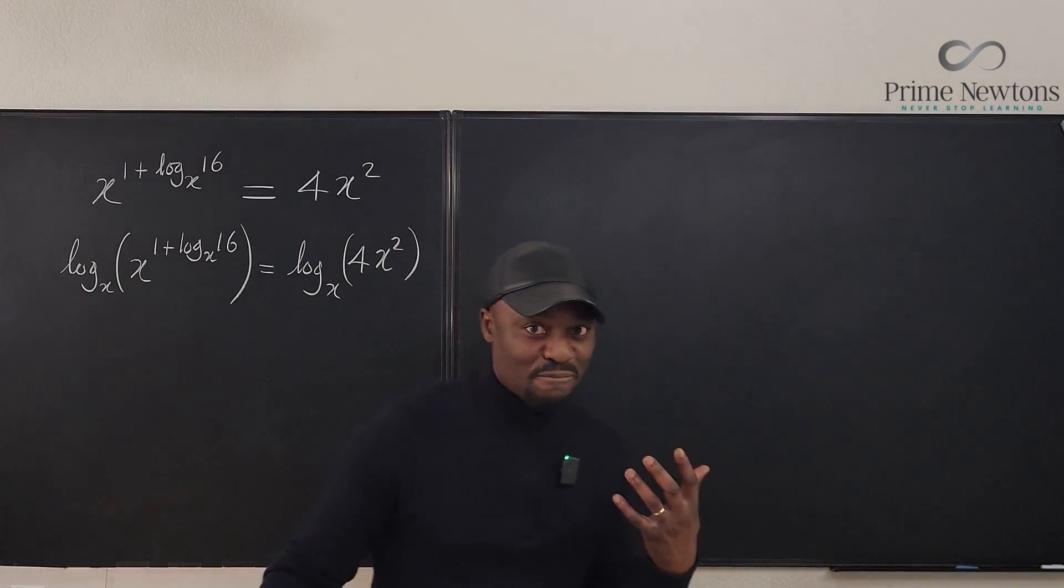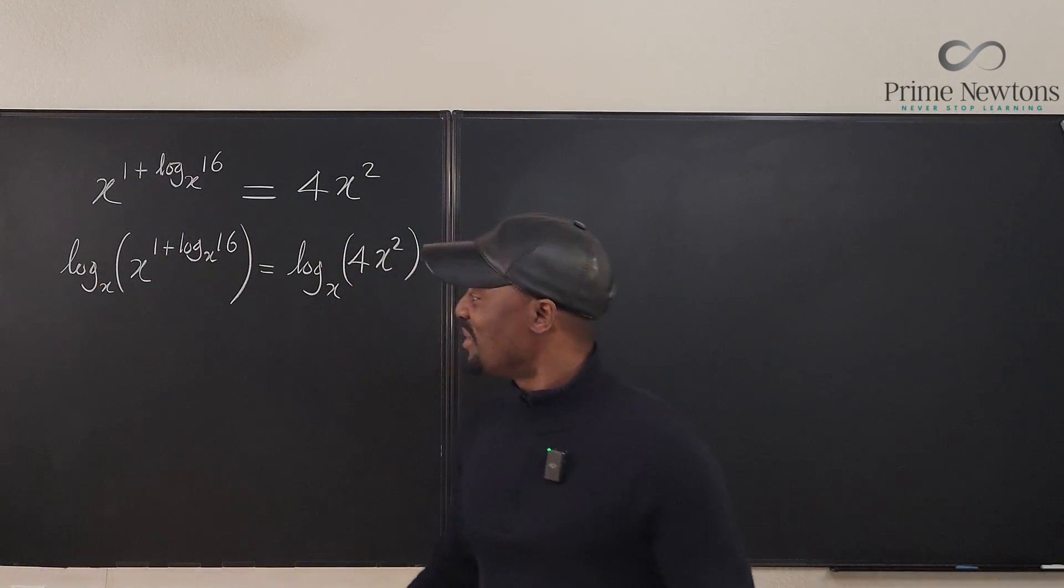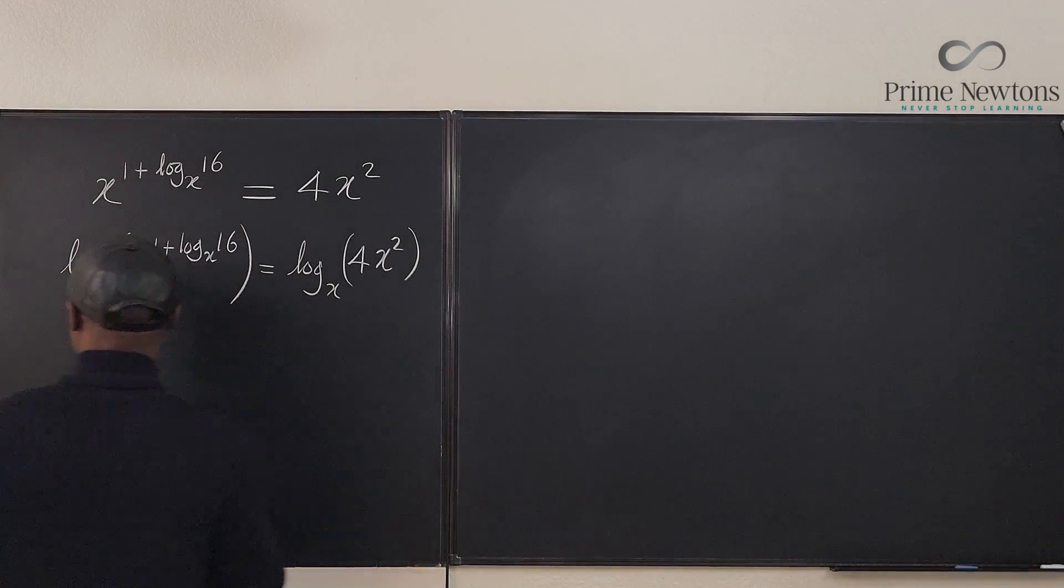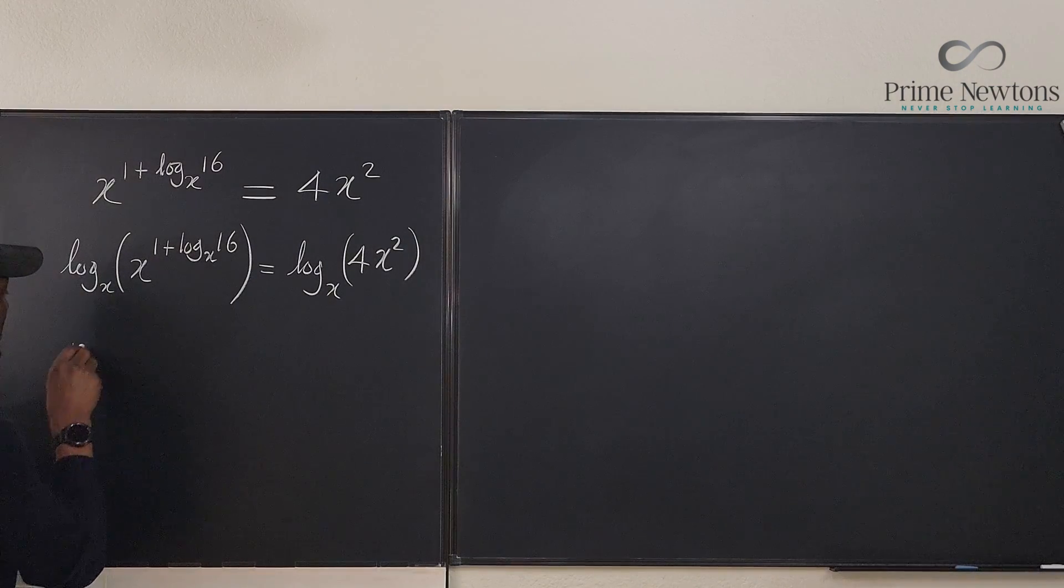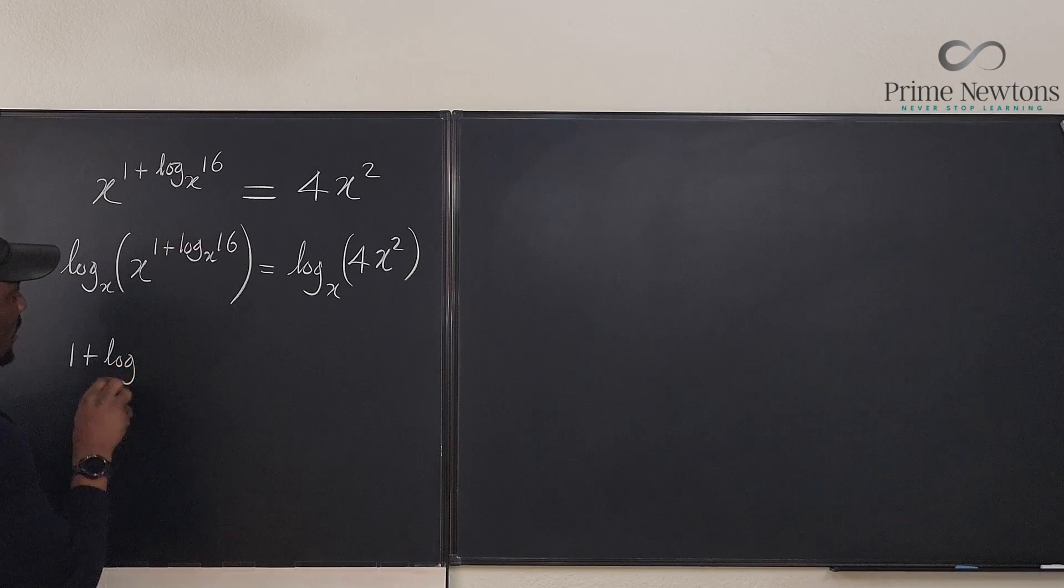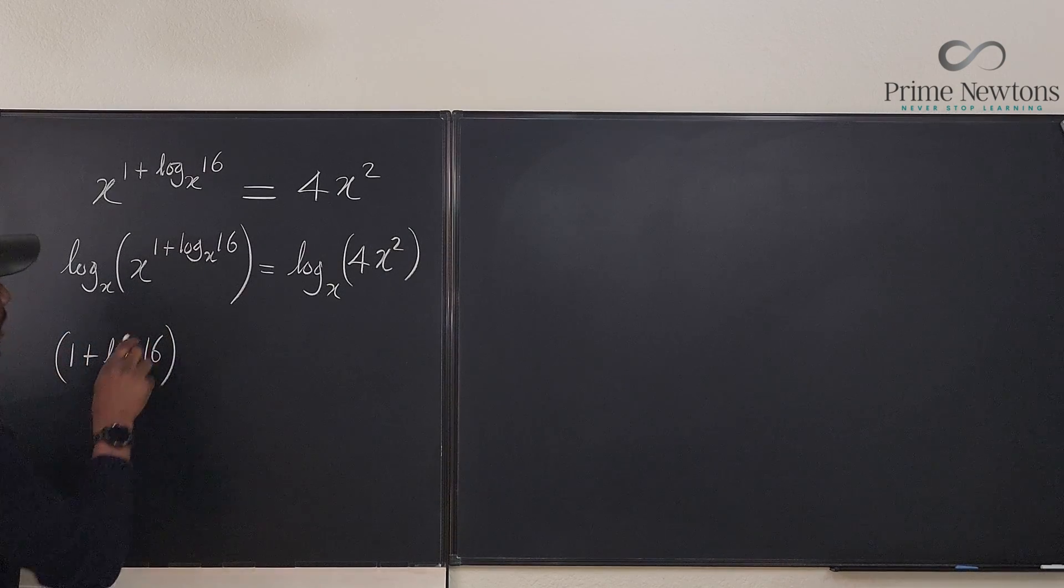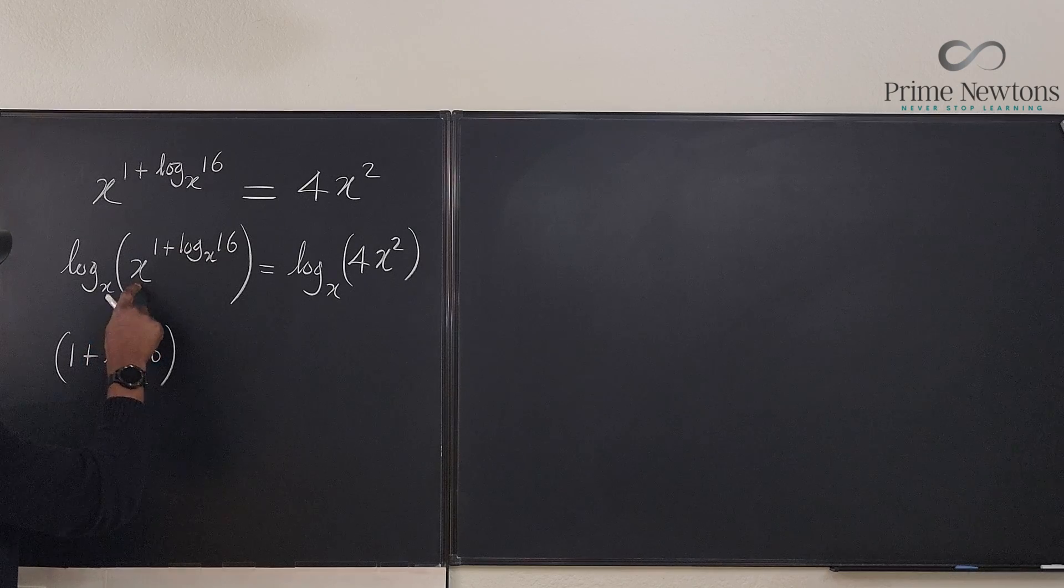How does this help me? Well, I already see the solution to this because now I can bring down the exponent to this side. So what I'm going to have is 1 plus the log base x of 16. Now I'll be multiplying. This is just what is left.